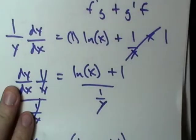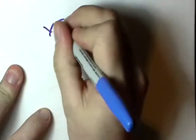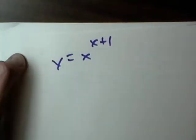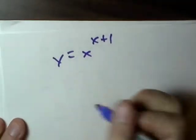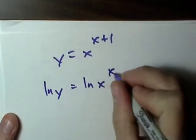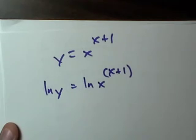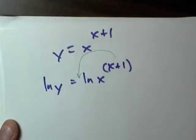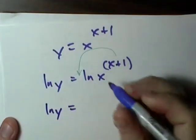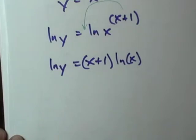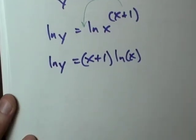So now let's try y equals x to the x plus one. Same deal — we want to find the derivative of this. So let's take the natural log of both sides. Now just the same thing: using the power rule, this quantity can go in front of the log, so we get natural log y equals (x plus one) times natural log of x.